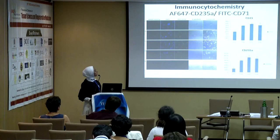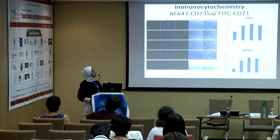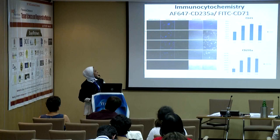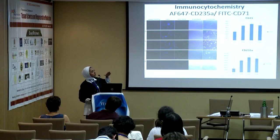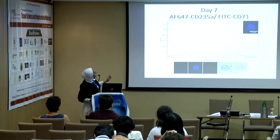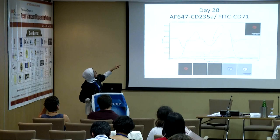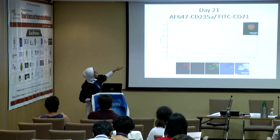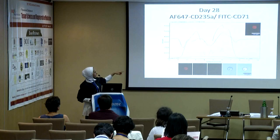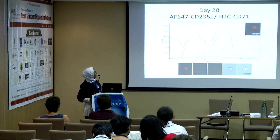These slides show CD235A versus CD71, which increased from day seven and continued increasing throughout differentiation toward erythropoiesis. By day 28, DAPI — the nuclear marker — started to decrease from day 21, while glycophorin A started to peak. By day 28, DAPI was almost negative, and cells again took the typical discoid shape.